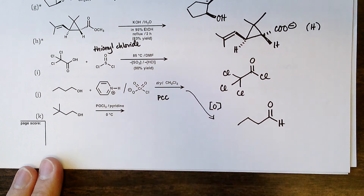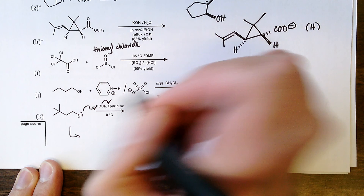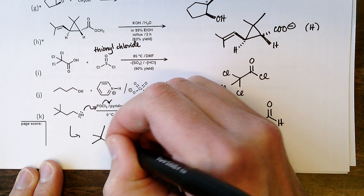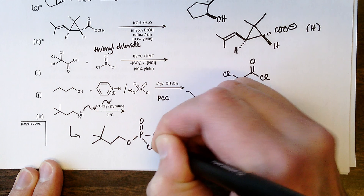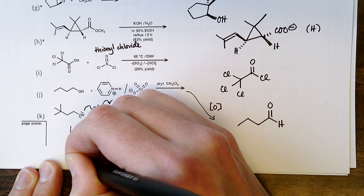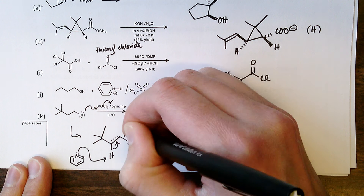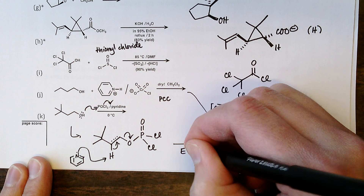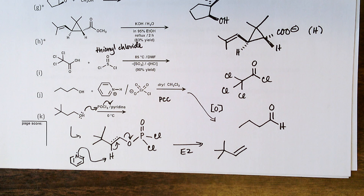Part k: the OH group displaces a chlorine on phosphorus oxychloride, generating a chlorophosphate leaving group. Pyridine acts as a base in a concerted E2 fashion to remove the beta proton and give the alkene elimination product. There is no carbocation rearrangement, so the monosubstituted alkene is the major organic product.